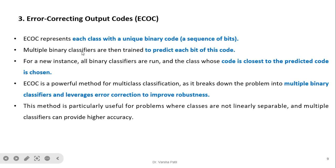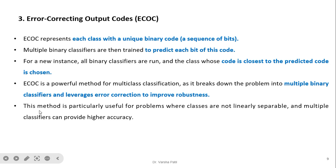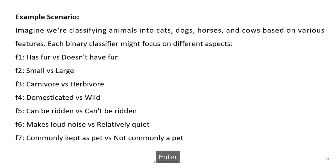The third strategy is Error Correcting Output Codes (ECOC). It represents each class with a unique binary code — a sequence of bits. Multiple binary classifiers are then trained to predict each bit of this code. For a new instance, all binary classifiers are run and the class whose code is closest to the predicted code is chosen. This is a powerful method as it leverages error correction to improve robustness, and is particularly useful when classes are not linearly separable.